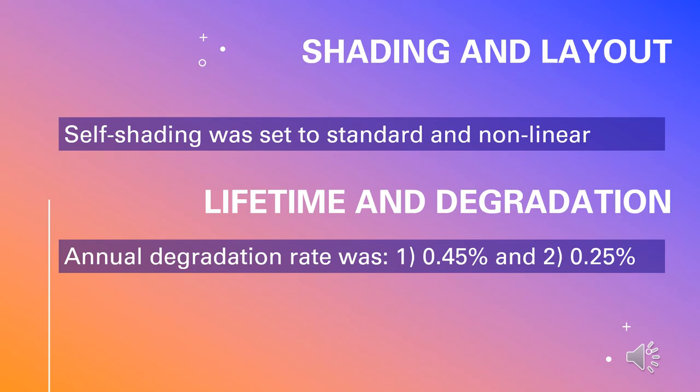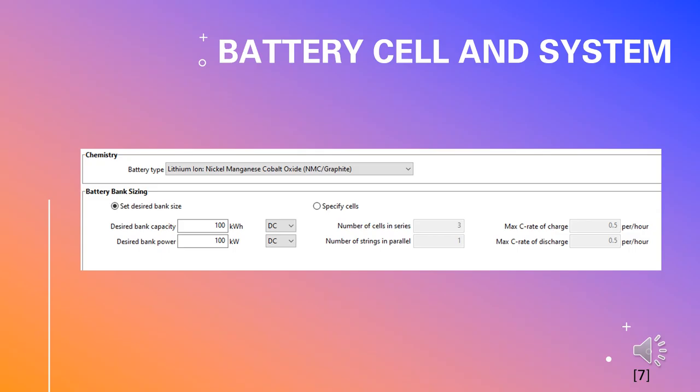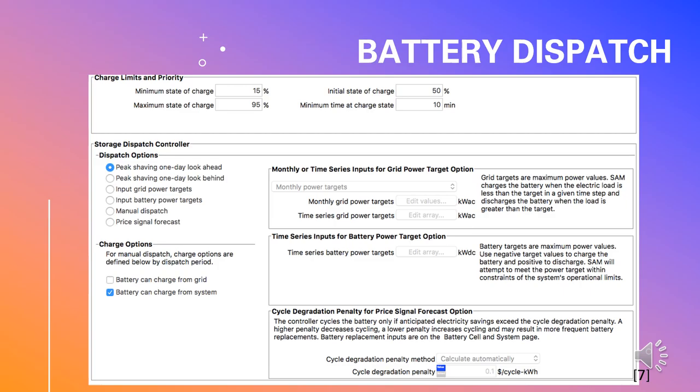In the shading and layout section, self-shading was set to standard and long linear. The annual degradation rate was found to be 0.45% and 0.25% from the panel spec sheets. We set the battery type to lithium-ion NMC graphite, and the battery capacity and desired bank power amounts were determined by maximizing net present value using the parametric function in SAM. We determined the minimum, maximum, and initial state of charge of the lithium-ion batteries and set them to 15%, 95%, and 50% respectively.